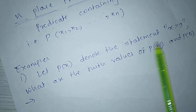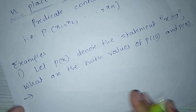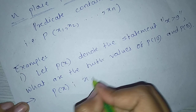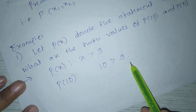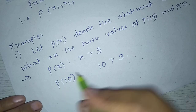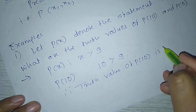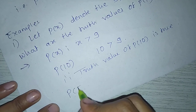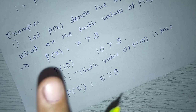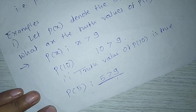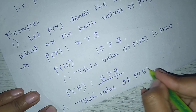Example: Let p(x) denote the statement x > 9. What are the truth values of p(10) and p(5)? P(x) is x > 9, so p(10) is 10 > 9. Here x = 10, and since 10 is greater than 9, the truth value of p(10) is true. For p(5), putting x = 5 we get 5 > 9. We know that 5 is less than 9, so the truth value of p(5) is false.